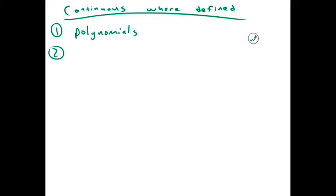Polynomials, rational functions. So rational functions are just polynomials over polynomials. Power functions, so pretty much the monomials and polynomials. So x squared. I'll give you some examples.